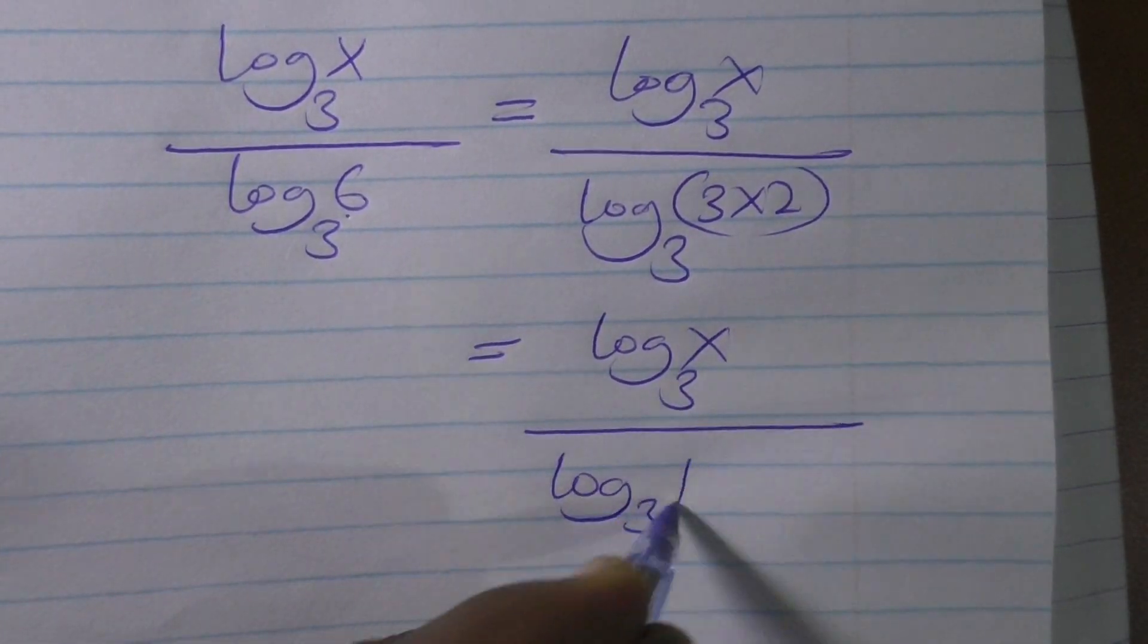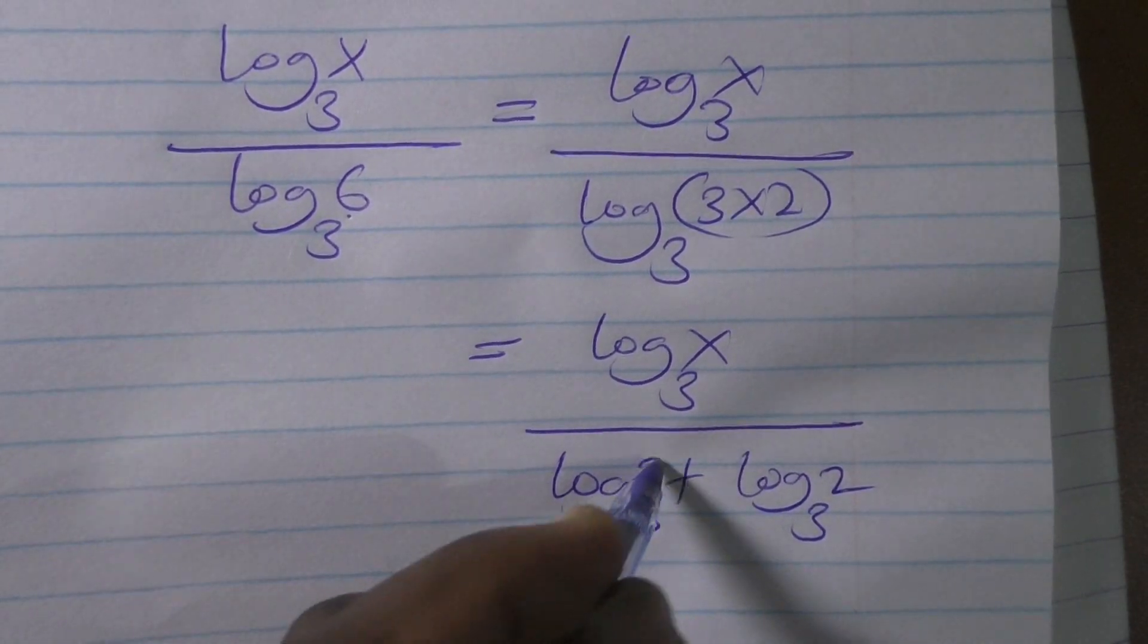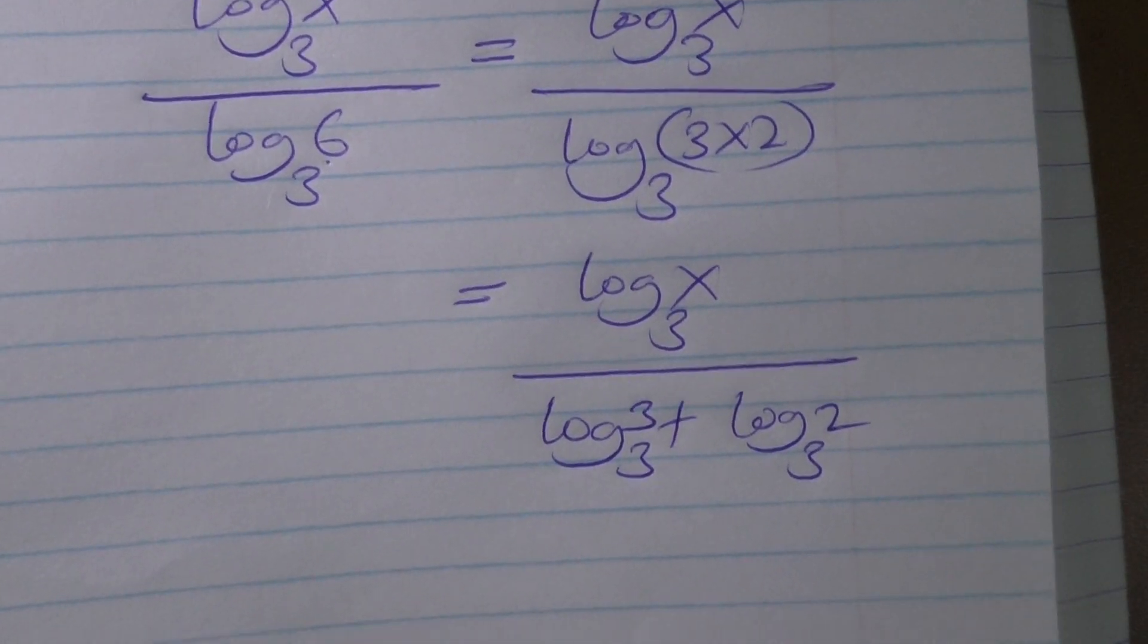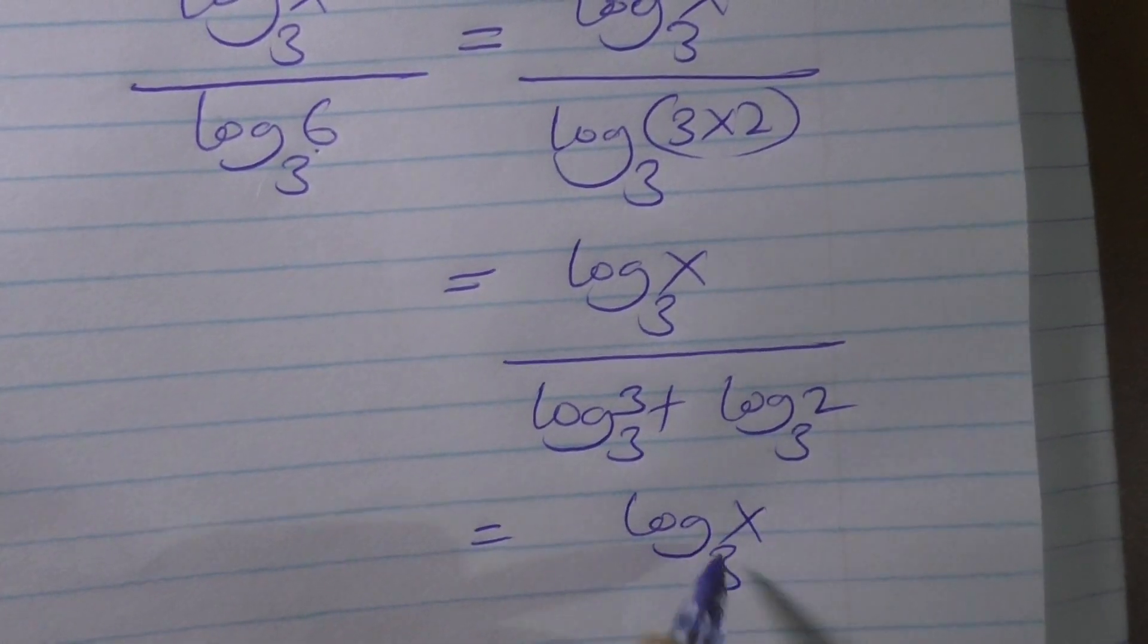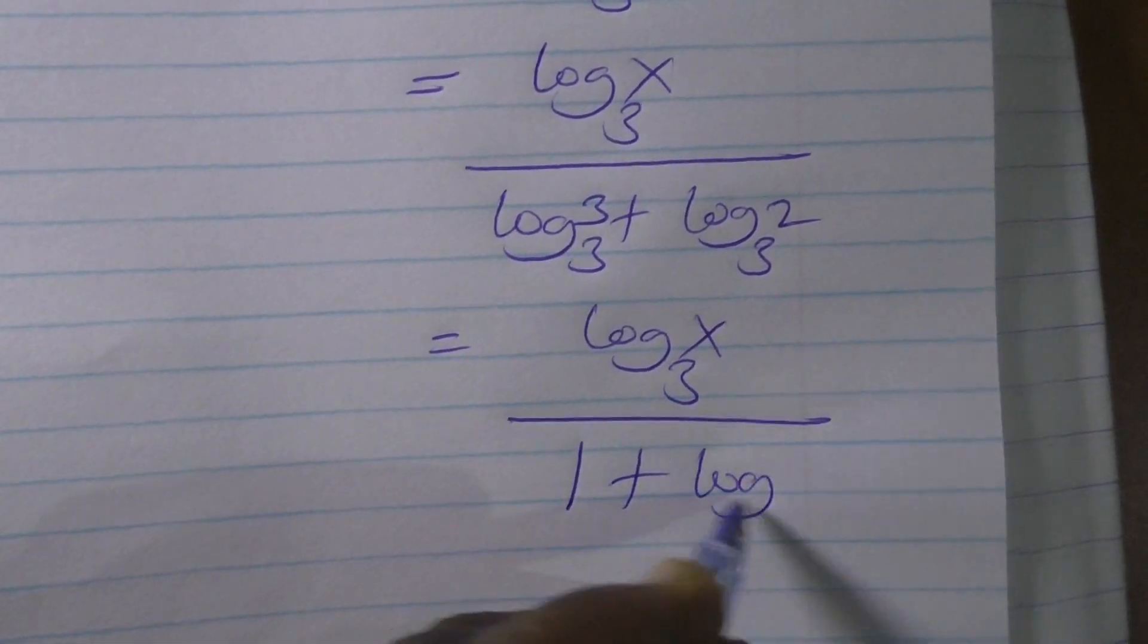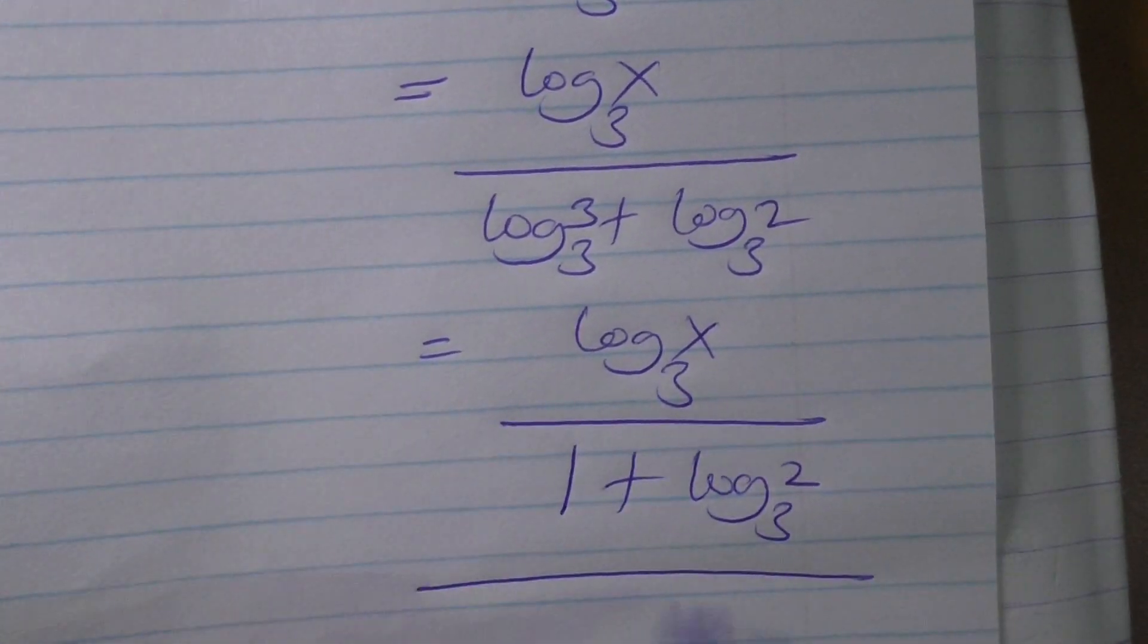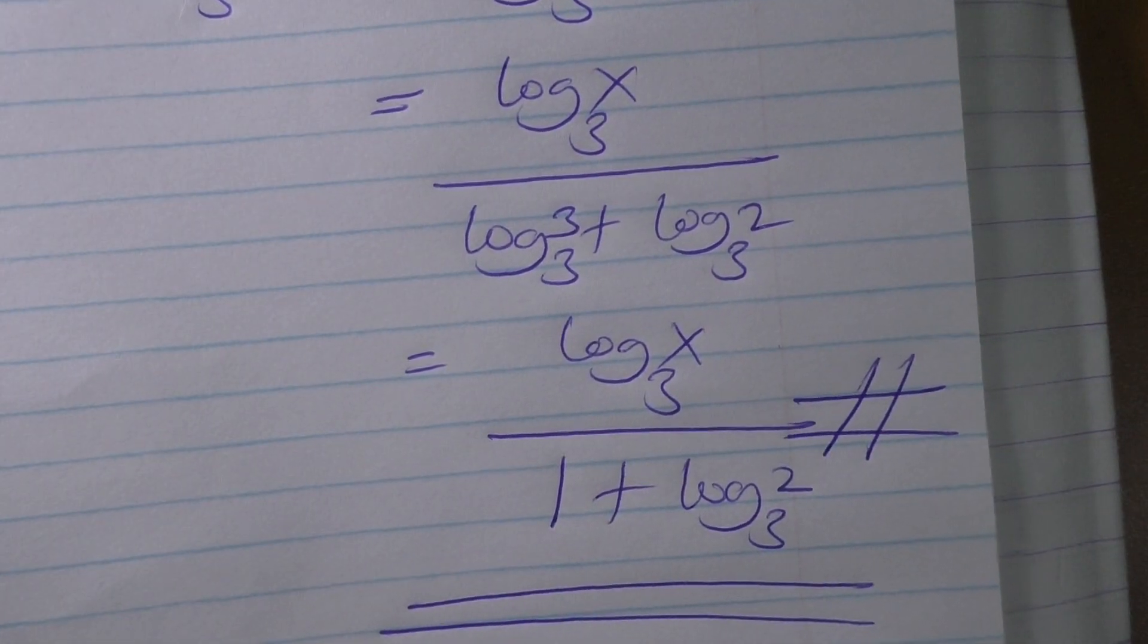We simplify this further. It gets us log base 3 of x over, since we are multiplying, we can separate them and add their log items. This is 3, so that gets us log base 3 of x over 1 plus log base 3 of 2. And that is how we prove it.